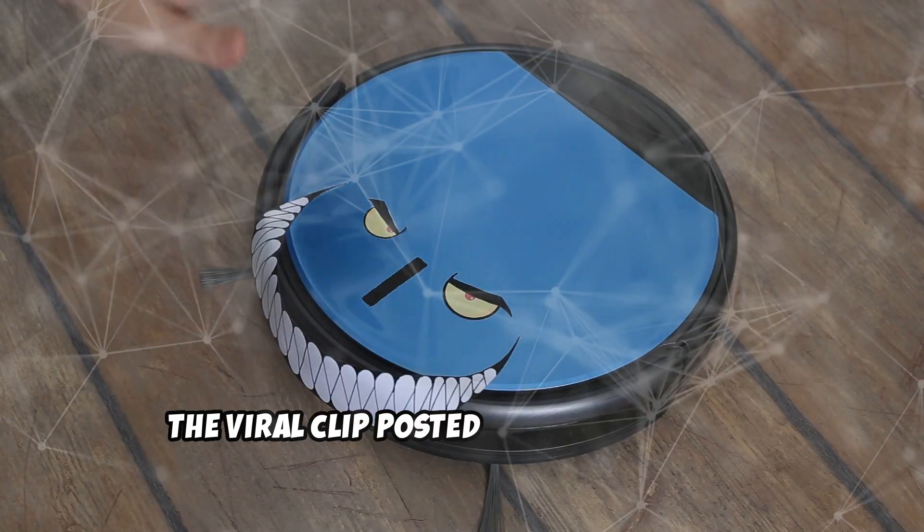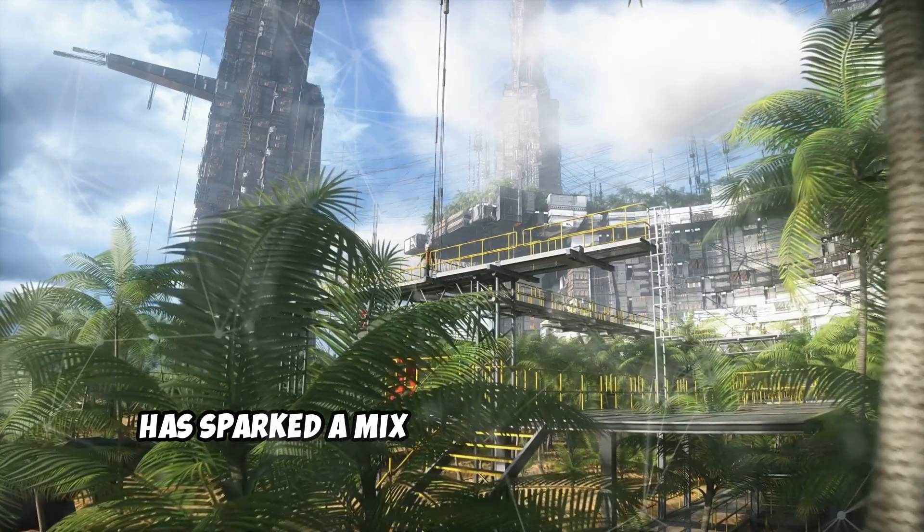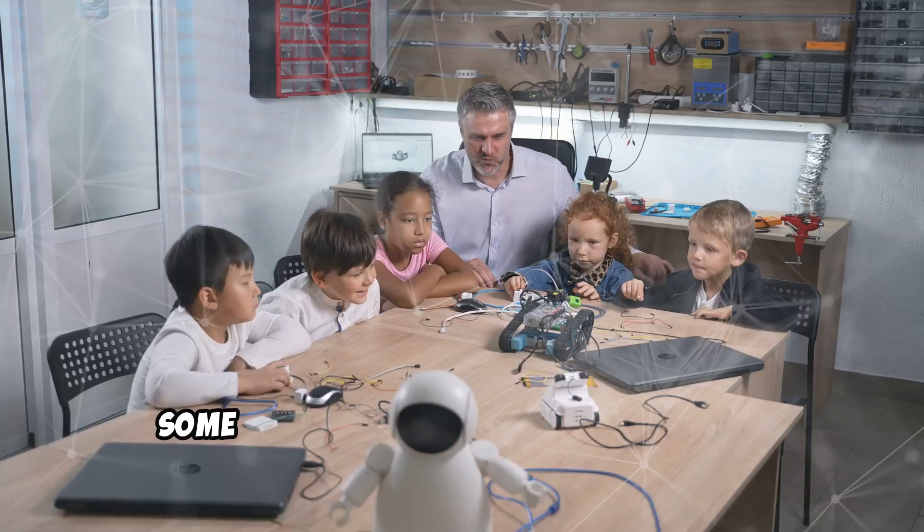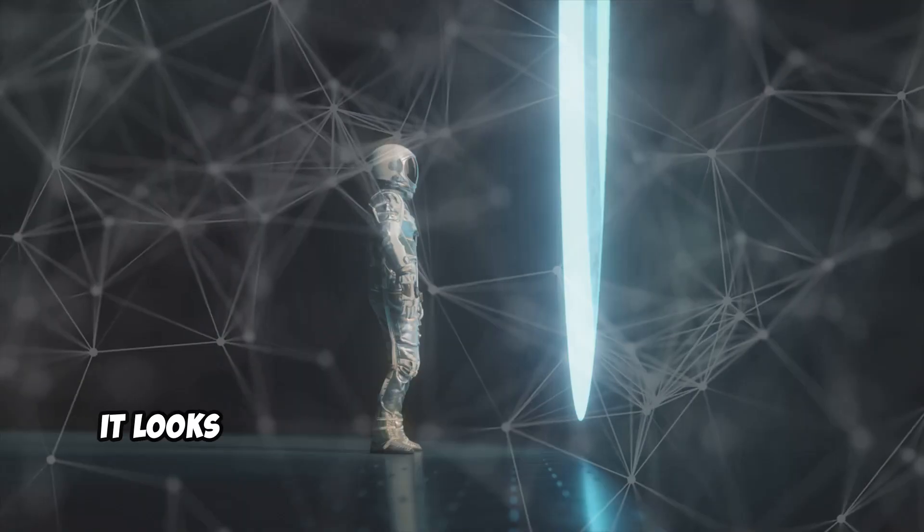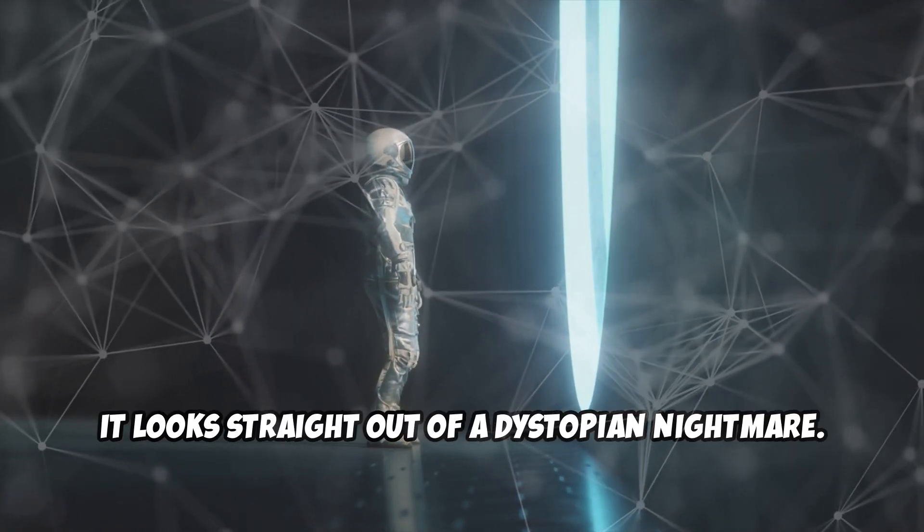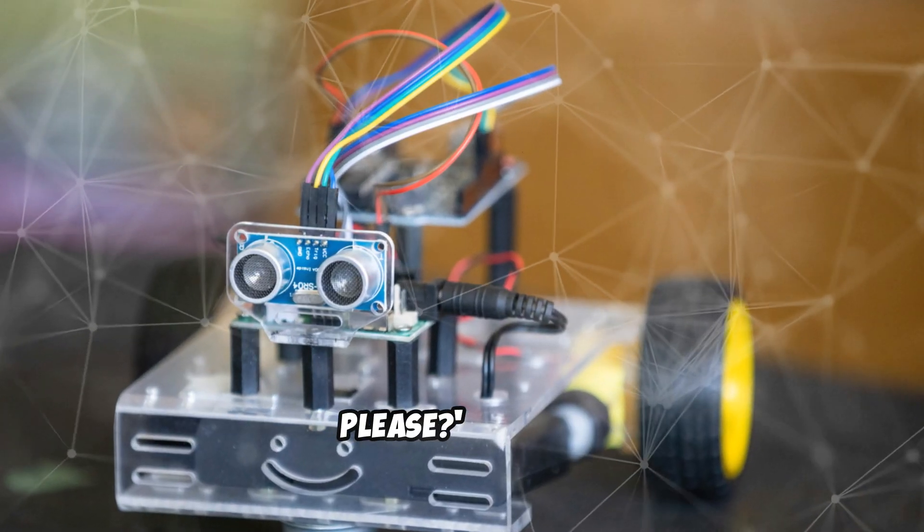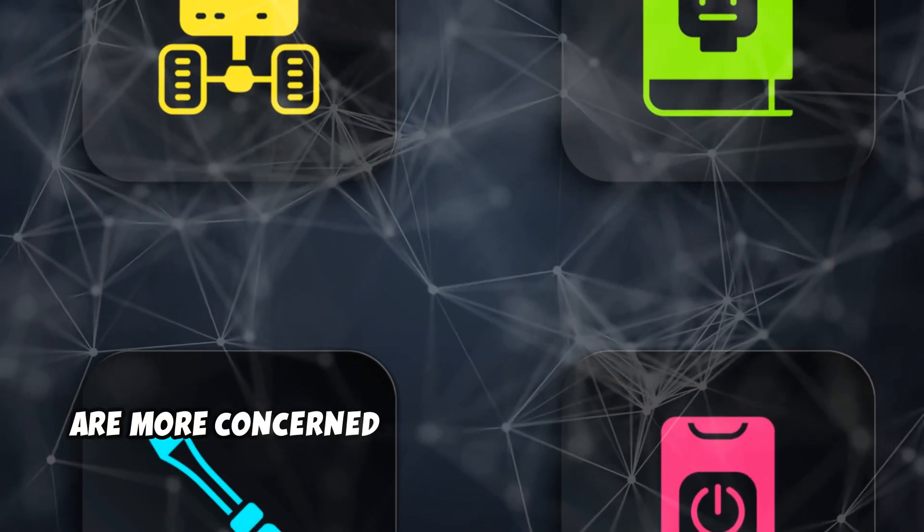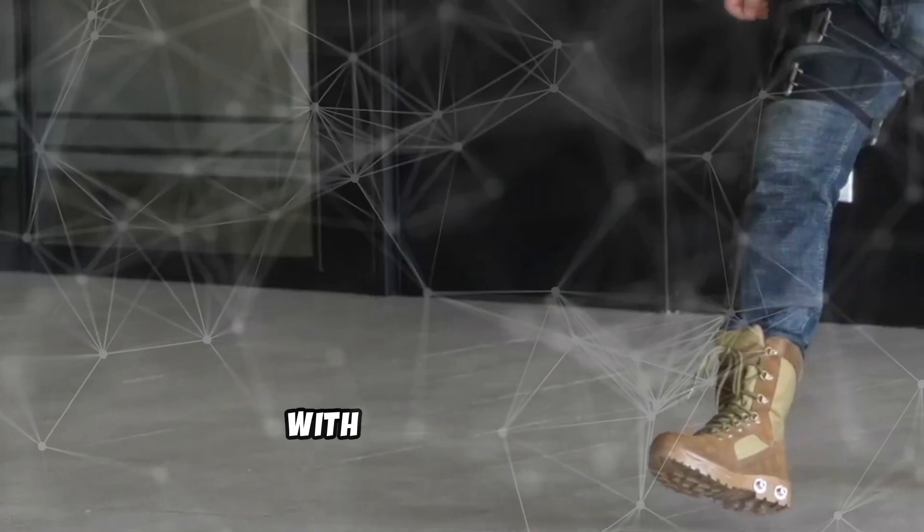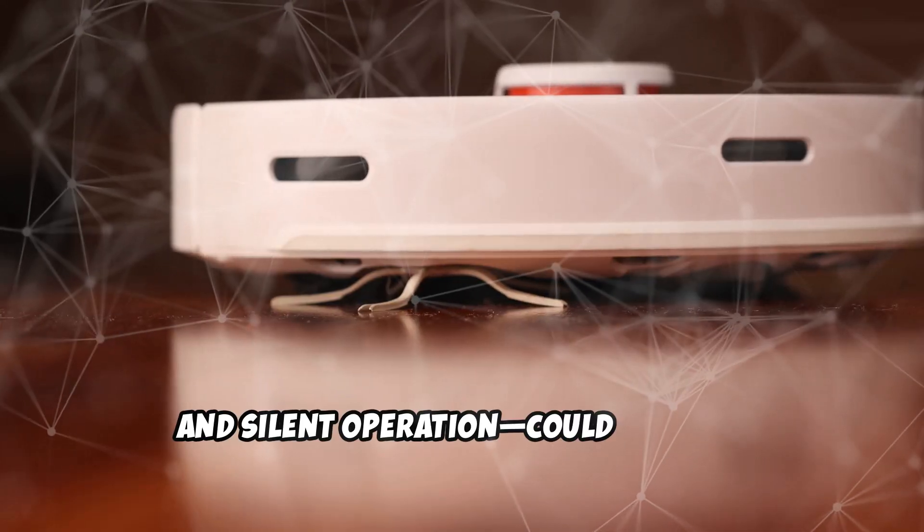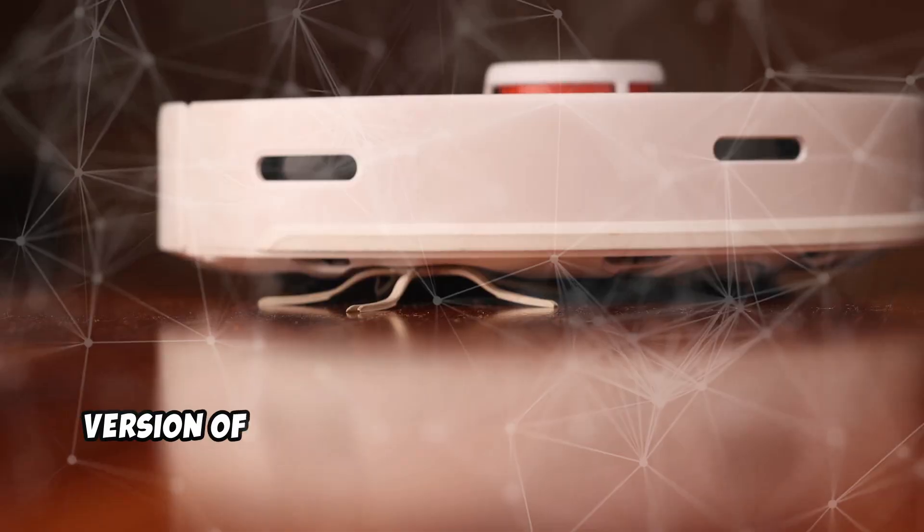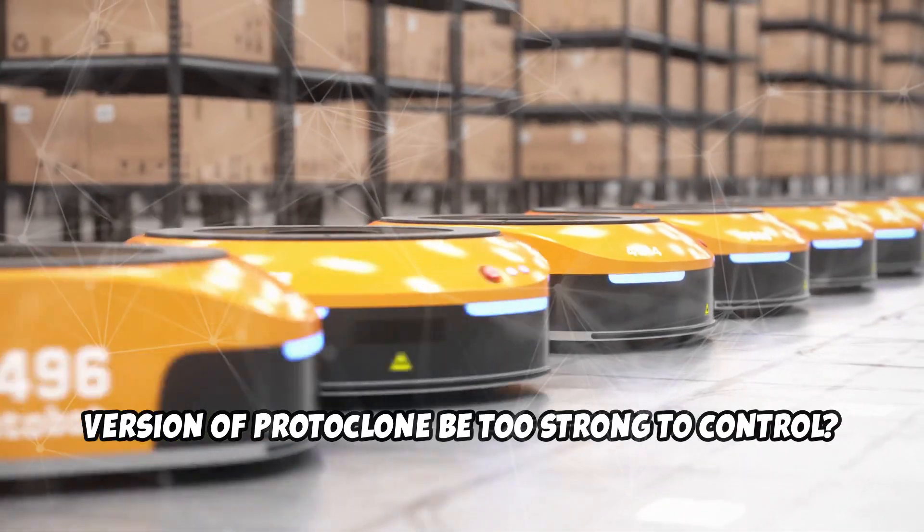The viral clip posted by Clone Robotics has sparked a mix of fascination and fear. Some call it awesome, while others say it looks straight out of a dystopian nightmare. One user even joked, can you just draw a smiley face on the head please? Others however, are more concerned about its human-like physique. With its athletic build, powerful muscles and silent operation, could a future version of Protoclone be too strong to control?